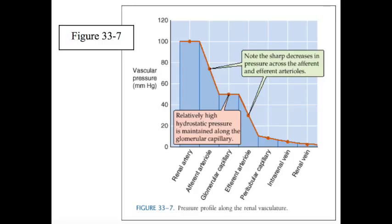There are realistic cases in which changes in either the afferent or the efferent arteriolar resistance dominate. A striking case in which a decrease in afferent arteriolar resistance dominates is the large increase in renal plasma flow that occurs with the loss of renal tissue, as after a uninephrectomy in a kidney donor. Glomerular filtration rate in the remnant kidney nearly doubles, owing primarily to a dramatic decrease in the resistance of the afferent arteriole.